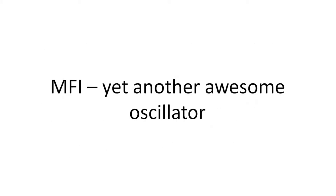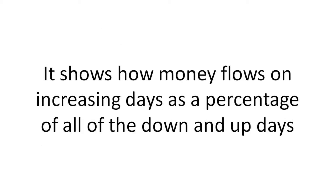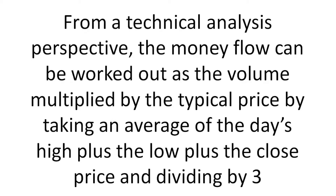MFI is another Awesome Oscillator. Money Flow Index is worked out over a certain time period and ranges from 100 down to 0. It shows how money flows on increasing days as a percentage of all the down and up days. From a technical analysis perspective, the money flow can be worked out as the volume multiplied by the typical price — taking an average of the day's high plus low plus close price, divided by 3.